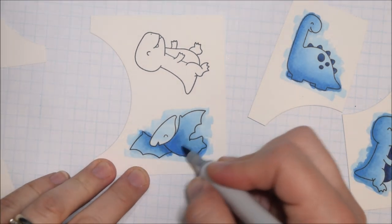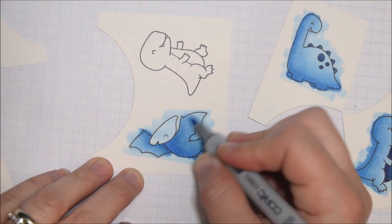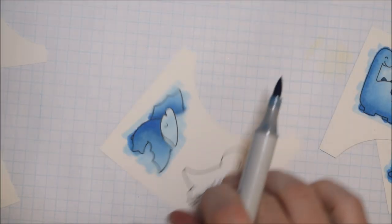Those are the lighter Copic colors that I'm using, but like on the T-Rex's belly I used a couple of dark markers and that's the B34, 37, and 39.